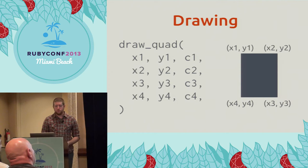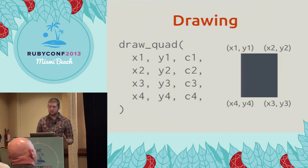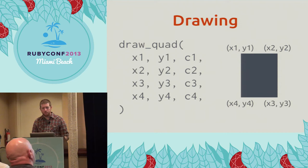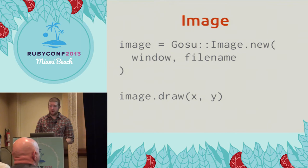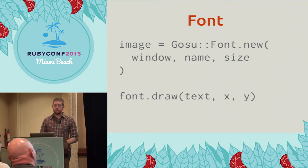Gosu also provides a bunch of helpers for implementing parts of these methods. A commonly used one is drawQuad, where you pass it four points consisting of an X, Y coordinate, and a color, and it draws a quadrilateral on the screen. There's also drawTriangle and drawLine. Similarly, you can construct an image with the window and a filename of, say, a PNG file, and just draw that image out to a given point on the screen. You can also construct a font with the name of the font and a size, and render text out onto the screen.